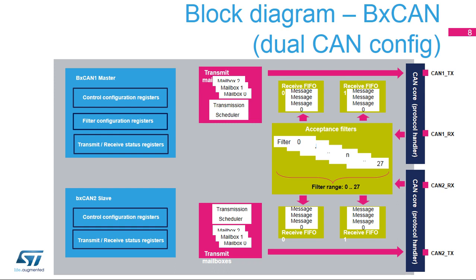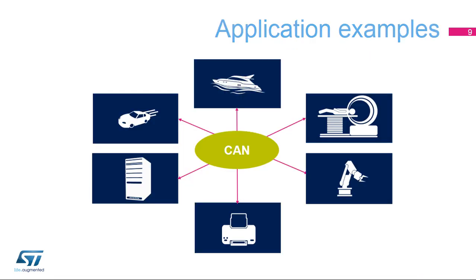This simplified block diagram of the BX CAN in a dual CAN configuration shows the shared 28 acceptance filters between the two BX CAN modules. The users can assign each filter to either FIFO 0 or FIFO 1 and configure each filter for identifier mask or list mode. The Controller Area Network or CAN bus was originally designed for automotive applications but is now also used in many other contexts.